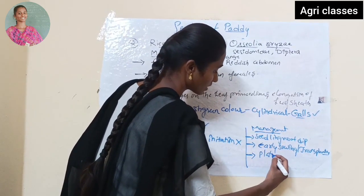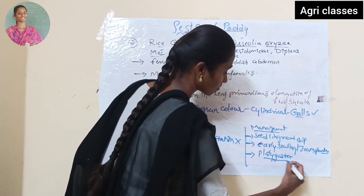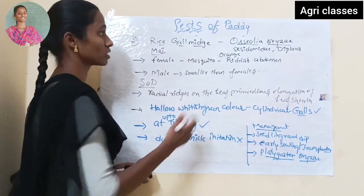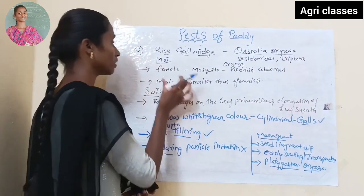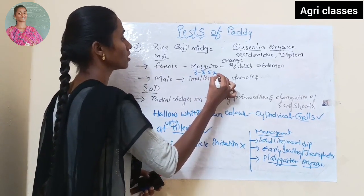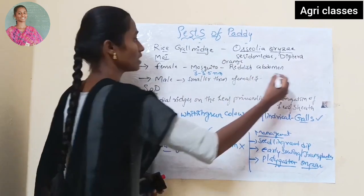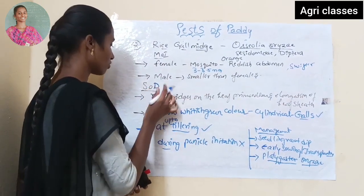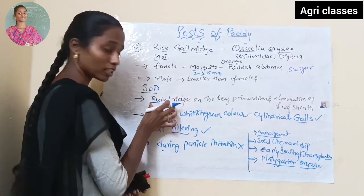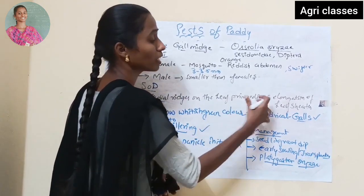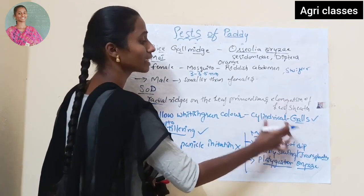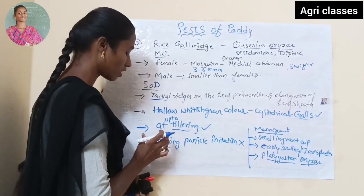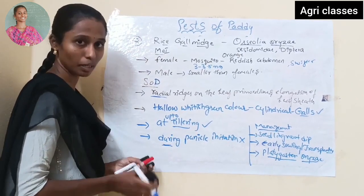Management includes using different biotypes, seedling root dip method with chlorpyrifos, early sowing or early transplanting to escape the pest, and parasitization with Platygaster oryzae. We cannot see the maggots during the panicle initiation stage.